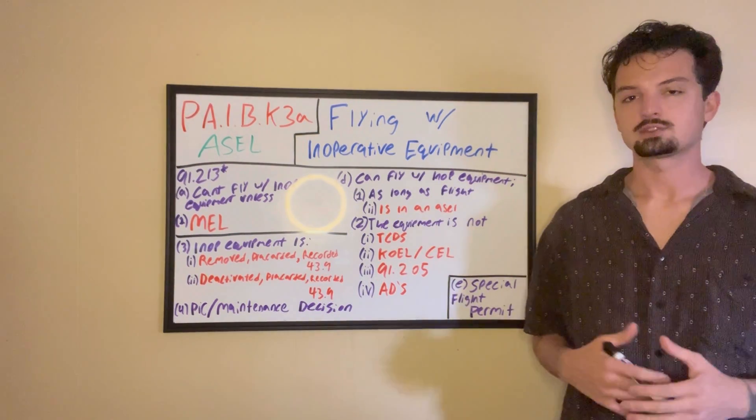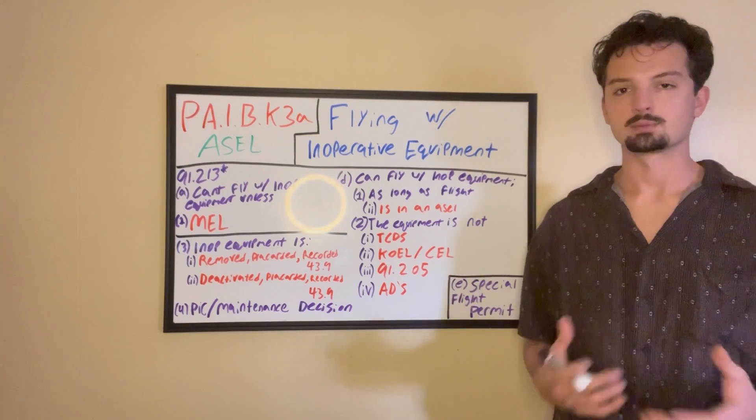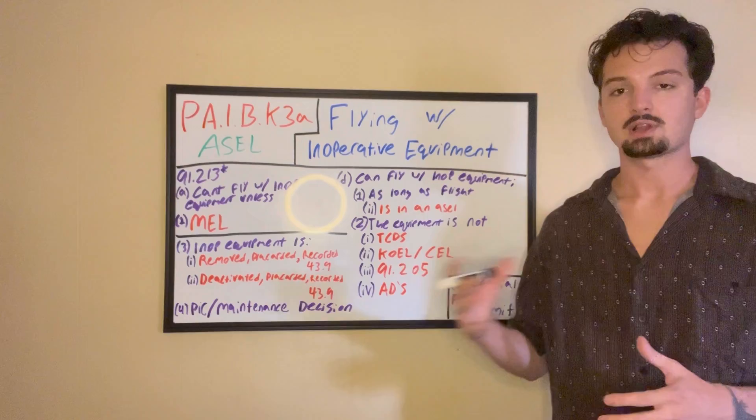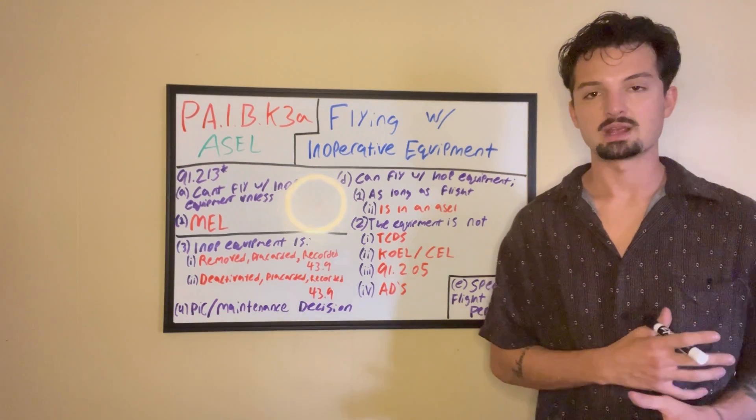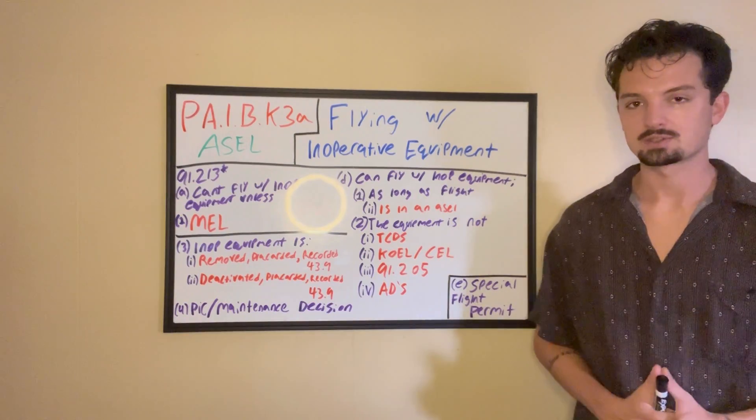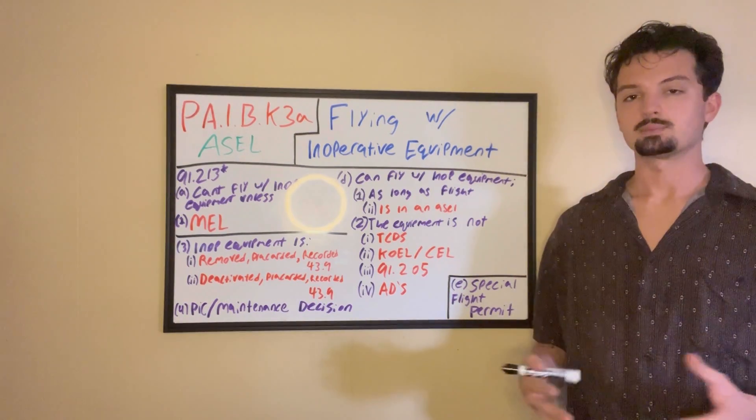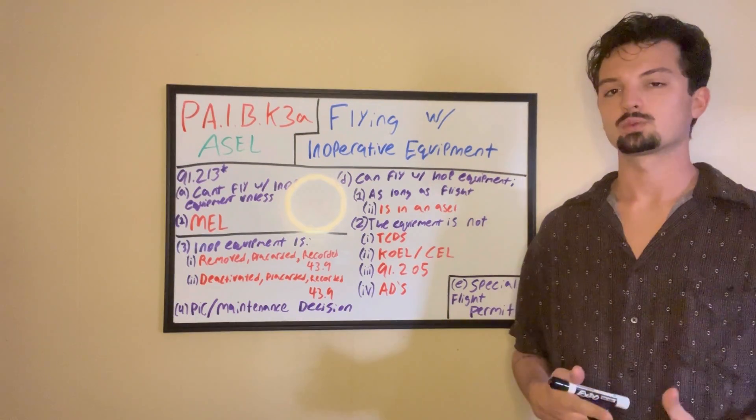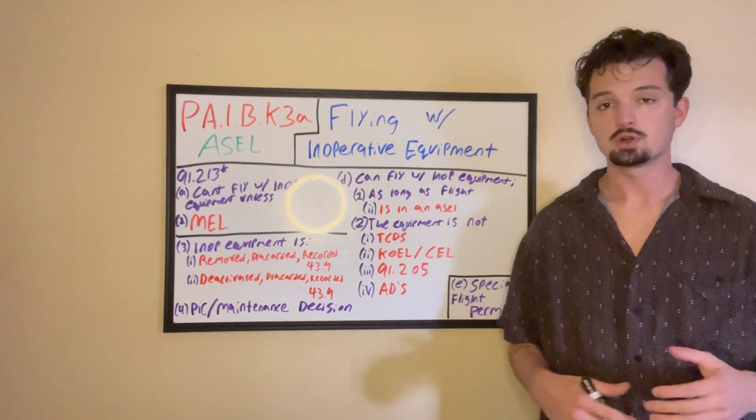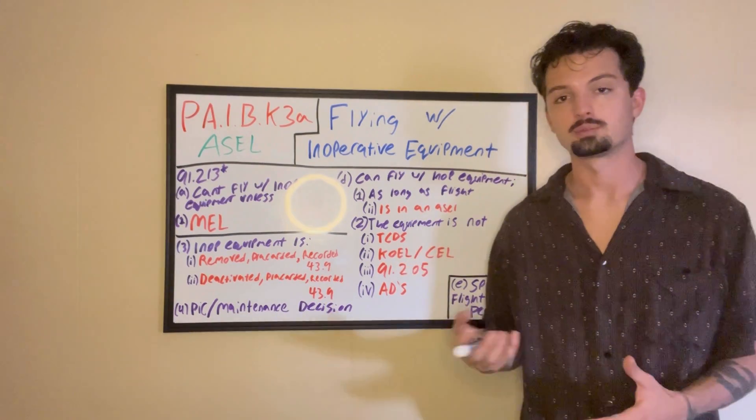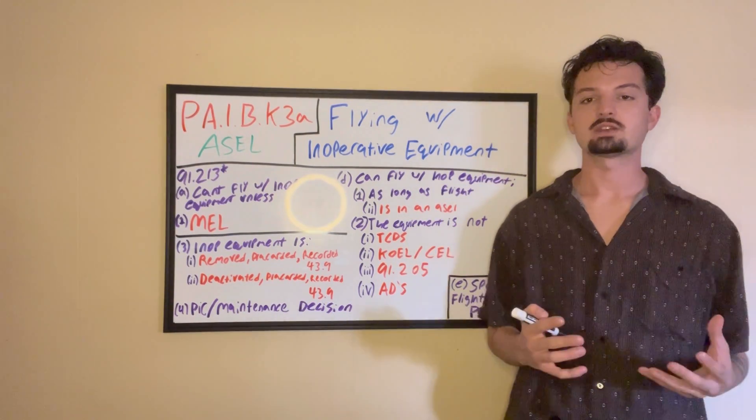That's where we move on to number three under D in 91-213. And basically, you've got two options laid out for you, and they're similar. You can take the broken piece of equipment, and you can remove it, placard it, and then record it in your maintenance log in accordance with 43-9, of course. Or you can deactivate the piece of equipment, placard it, and also record it in accordance with 43-9. So to remove a piece of equipment, we understand what that is. We're literally taking it out of the plane.